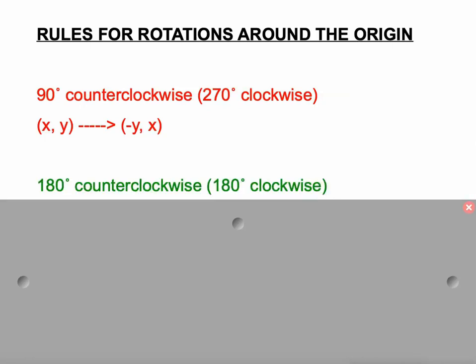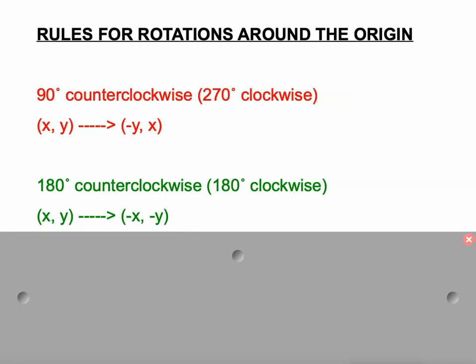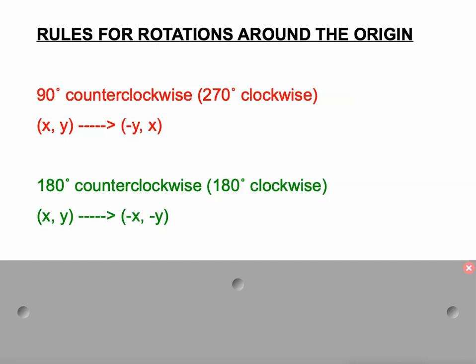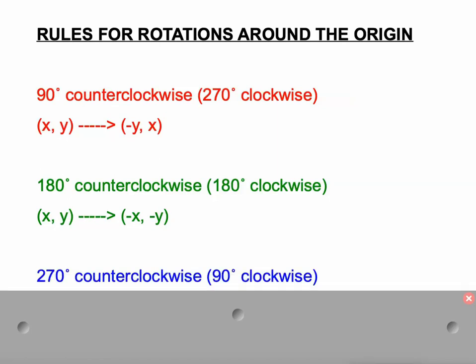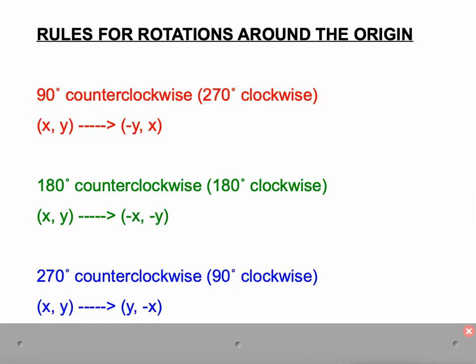A 180 degree counterclockwise rotation, which is the same as a 180 degree clockwise rotation — halfway around a circle — is where (x, y) becomes (-x, -y). So your new X value is the opposite of your old X value, and your new Y value is the opposite of your old Y value.